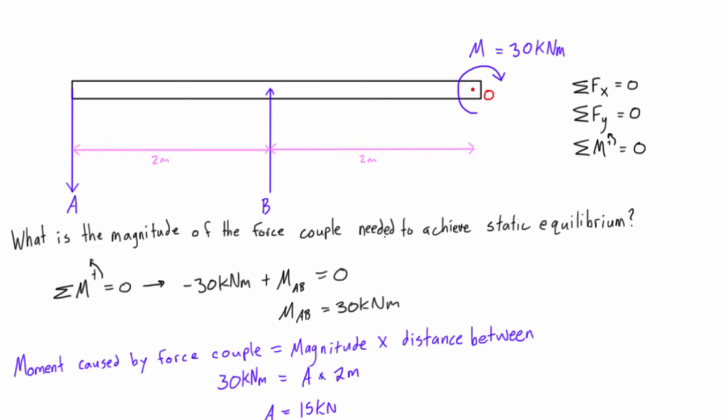And there we go, by assigning the magnitude of A to be 15 kilonewtons, and the magnitude of B to be 15 kilonewtons, we will satisfy static equilibrium in the y direction, because they'll cancel each other out. We'll also be satisfying static equilibrium in the x direction, because there's no forces acting in the x direction.